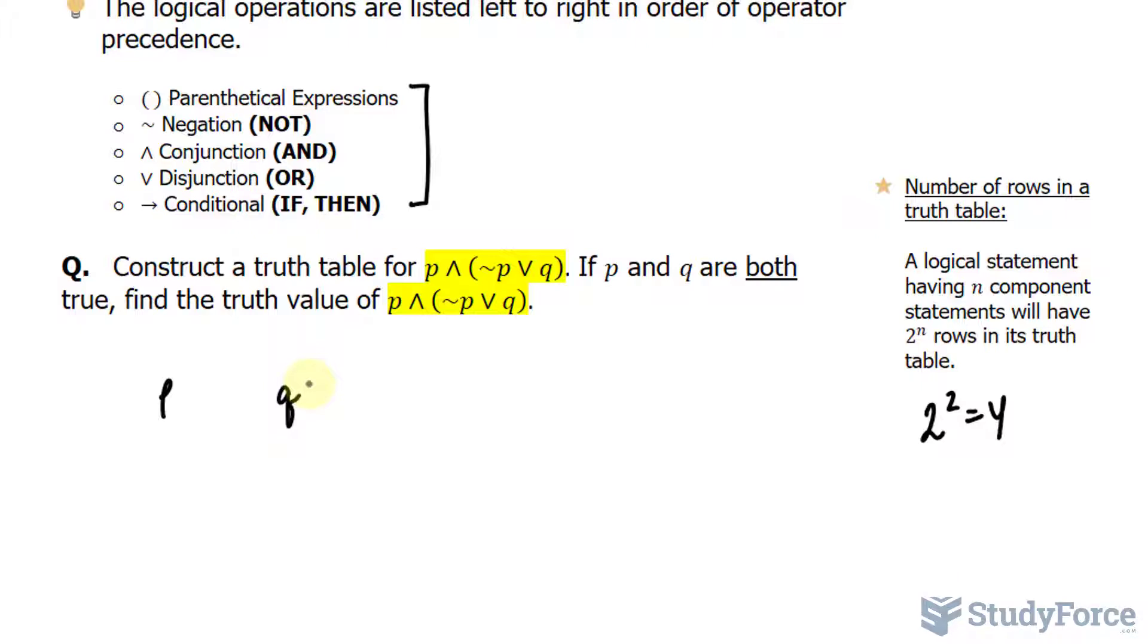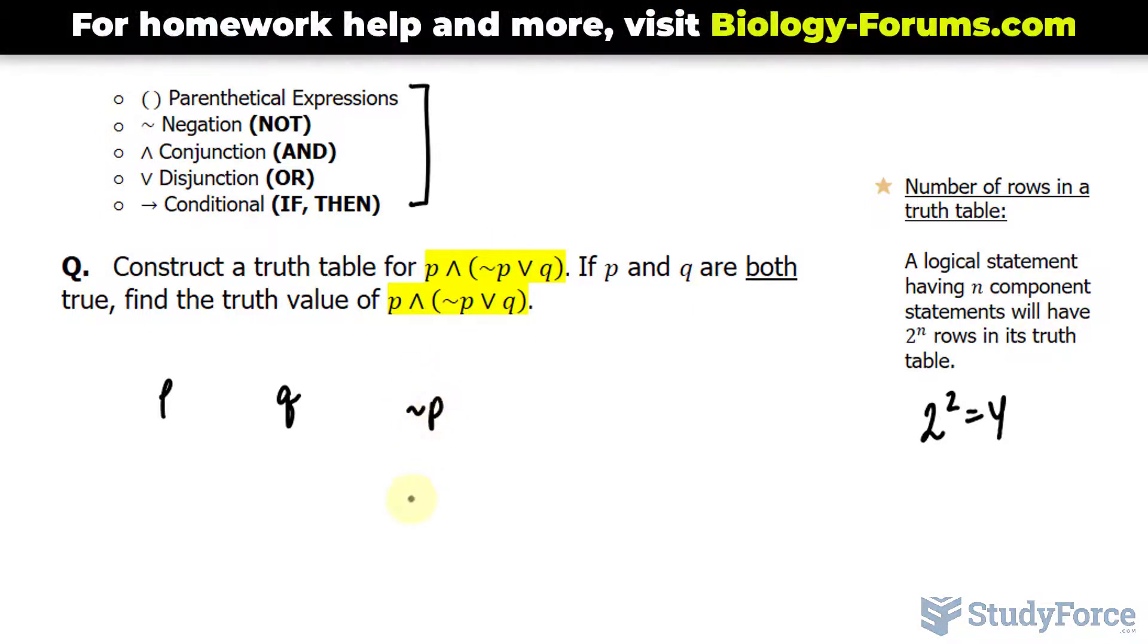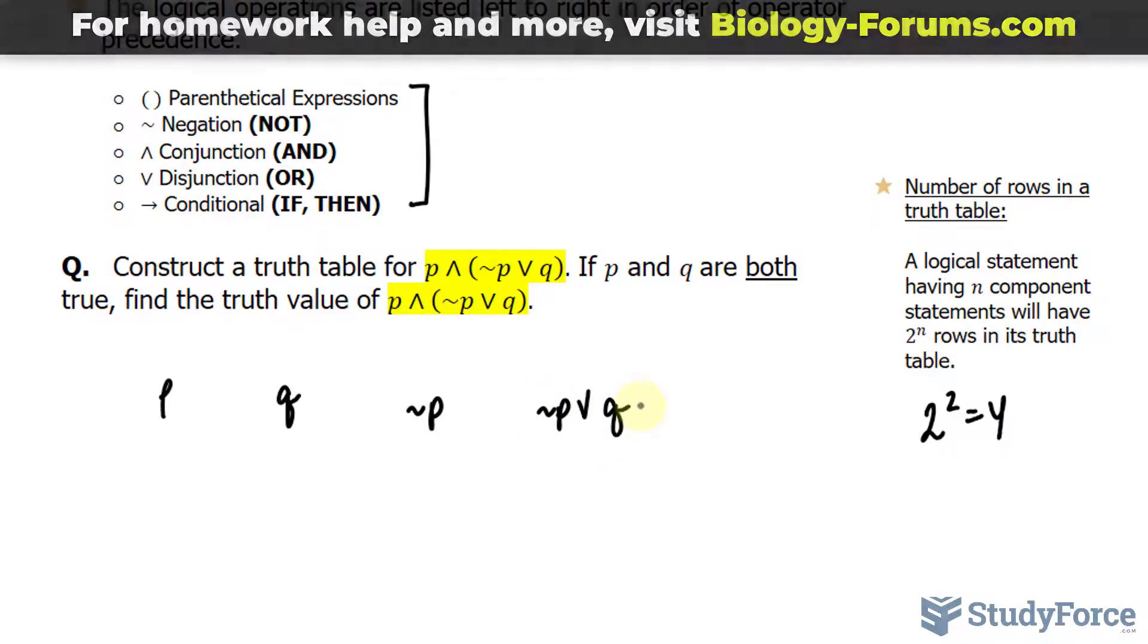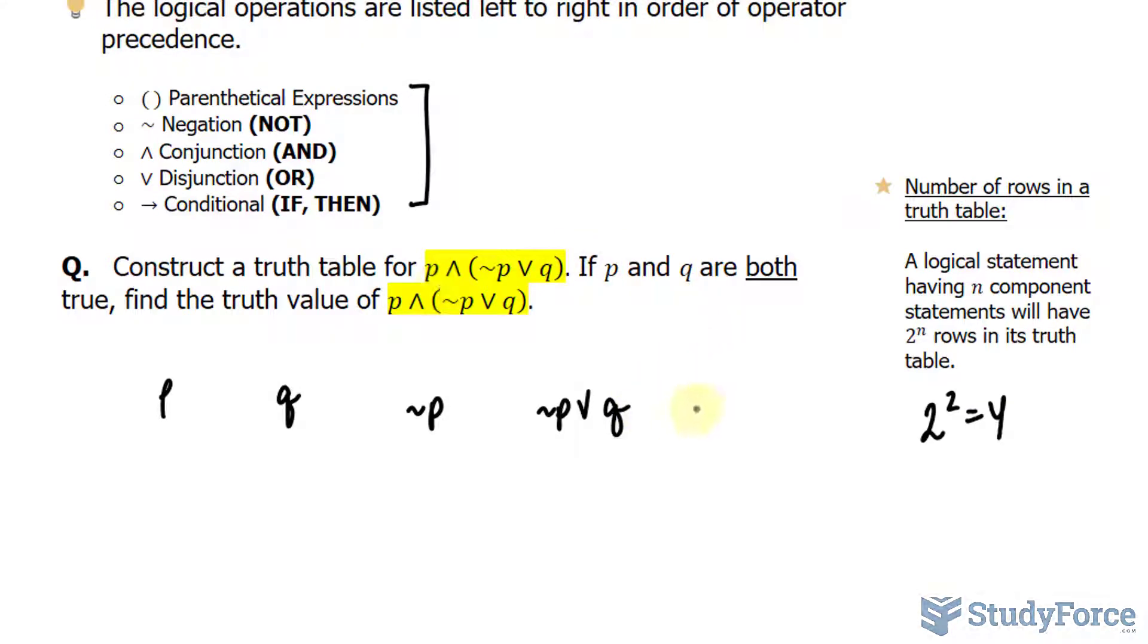According to the order here, we have to look at the parentheses. Within these parentheses, negation takes priority. So I'll write down another column for ¬p, or not p, and a column exclusively for ¬p ∨ q. Our last column will be for the whole statement: p ∧ (¬p ∨ q).